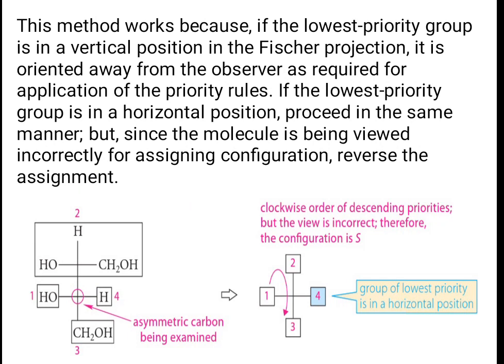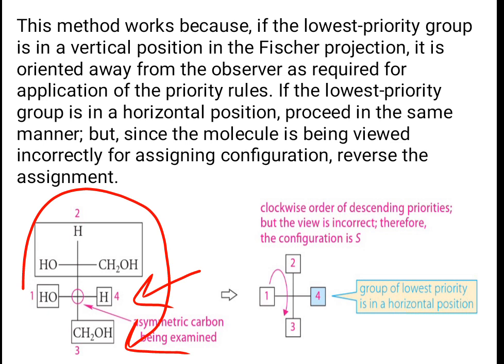This method works because if the lowest priority group is in a vertical position in the Fisher projection, it is oriented away from the observer as required for applying the priority rules. If the lowest priority group is in a horizontal position, proceed the same way but reverse the assignment, since the molecule is being viewed incorrectly. So if you got clockwise rotation with the lowest priority group horizontal, you must consider it counter-clockwise, which gives S.